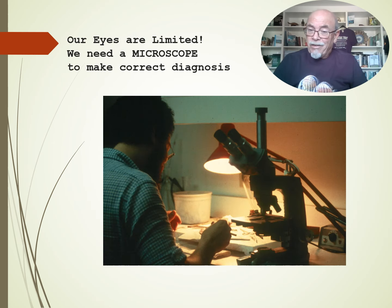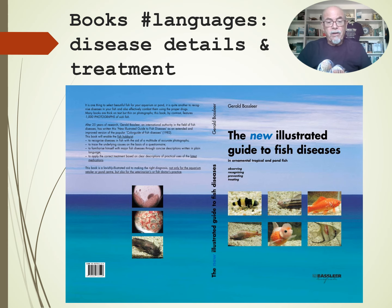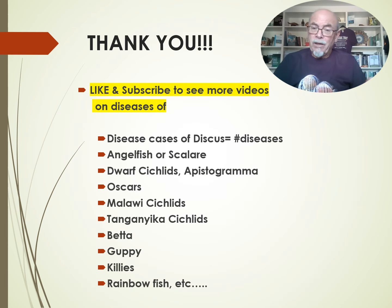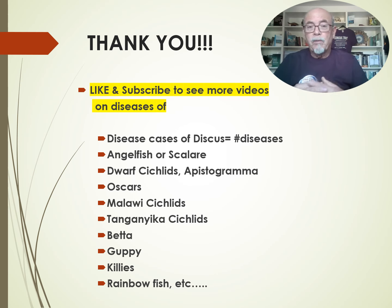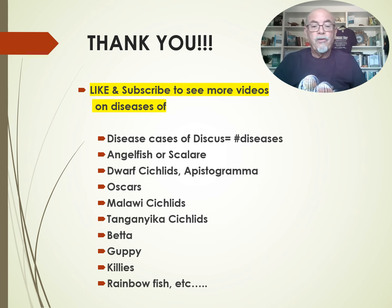As I said, a microscope is important because our eyes are limited. Get more details for treatments and more details about diseases in my big book. I thank you for watching — please like this video and subscribe to see more videos on diseases and cases of diseased discus. In the future I will talk about the important diseases of angelfish, dwarf cichlids, oscars, Malawi cichlids, Tanganyika cichlids, bettas, guppies, killifish, rainbow fish, and many more. I hope you like this one — particularly discus lovers should watch it. It gives you lessons about what can occur, what you can do, and how to treat. Subscribe to learn more. Thank you for watching — become a better fish hobbyist. Bye bye.